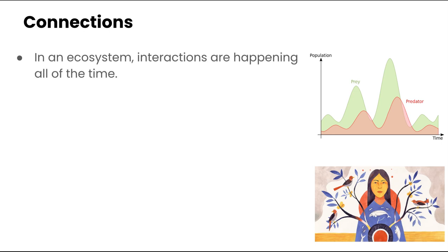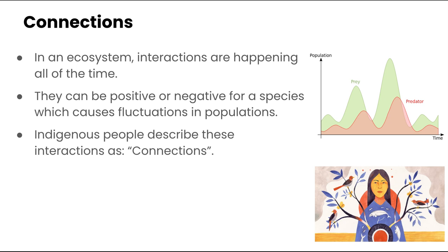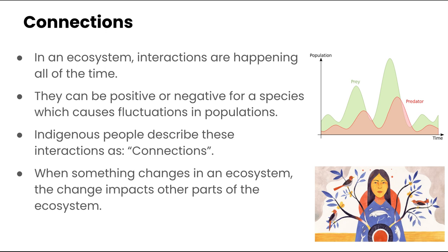In terms of an ecosystem, these interactions are happening all the time, and they can be either positive or negative. It depends on what that particular interaction is. They can be positive or negative for a species, and that's going to cause fluctuations in the population numbers. When something changes in an ecosystem, the change is going to impact other parts of the ecosystem as well. Let's take a look at some of the different types of species interactions.